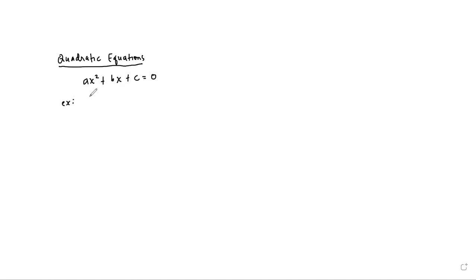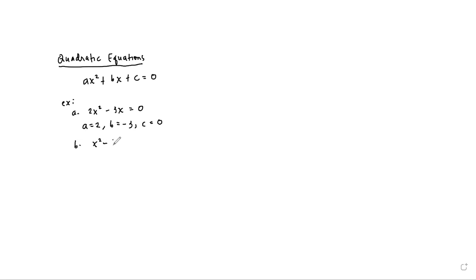Examples of quadratic equations are as follows. You can have 2x squared minus 3x equals 0. This is a quadratic equation in standard form, where a is equal to 2, b is equal to negative 3, while c is equal to 0. Another example would be x squared minus 16 equals 0. This is also a quadratic equation in standard form, where a is equal to 1, and since there is no x term, b is equal to 0, while negative 16 is the constant c.